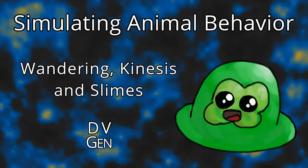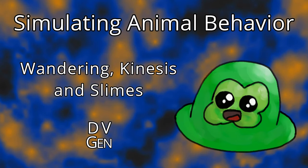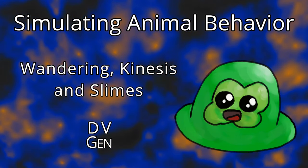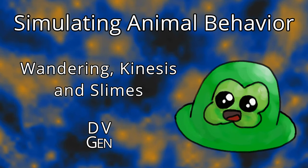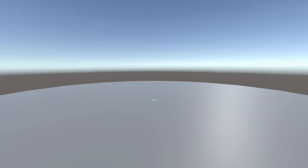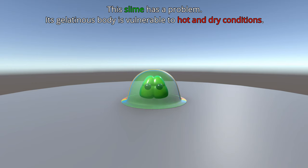Kinesis is a way that very simple organisms, like this hypothetical slime here, can wander into good areas and stay there without actually understanding what they're doing. Alright, here's my world in Unity, and here's our little slime. The issue the slime has is its body is made of slime. It is very vulnerable to desiccating in hot dry conditions.